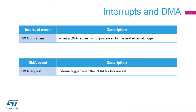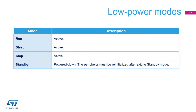The DAC can generate a DMA underrun interrupt. To transfer data from memory, a DMA request can be generated. The digital-to-analog converter is active in the following low-power modes: run, sleep, low-power run, low-power sleep, stop zero, and stop one. In stop two mode, the DAC is not available, but the content of its registers is kept.